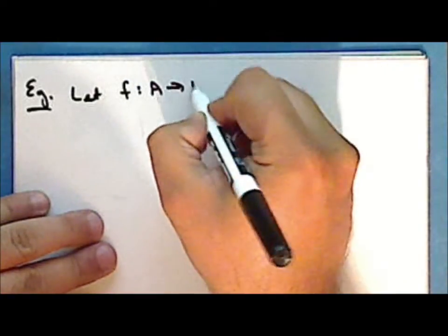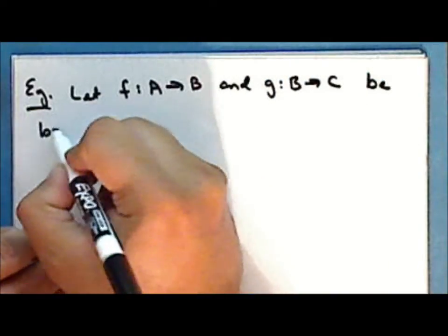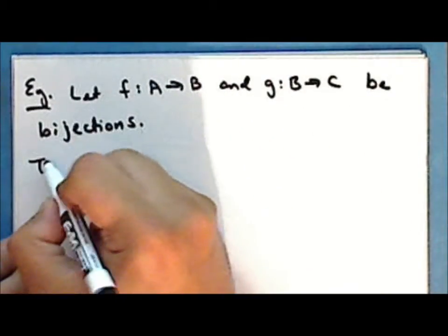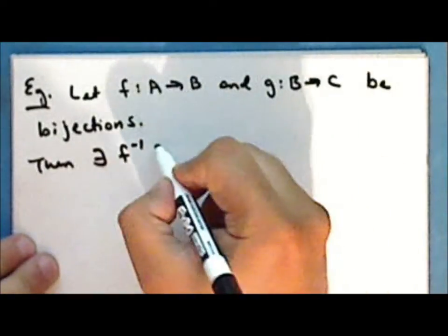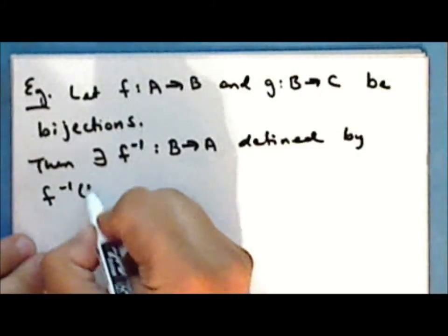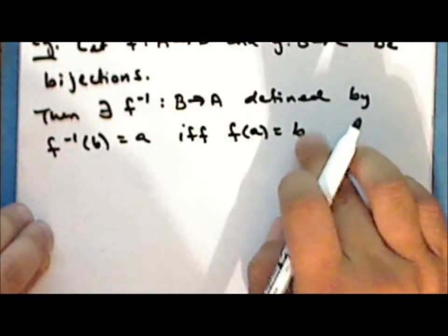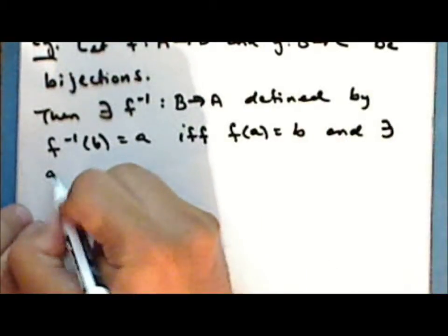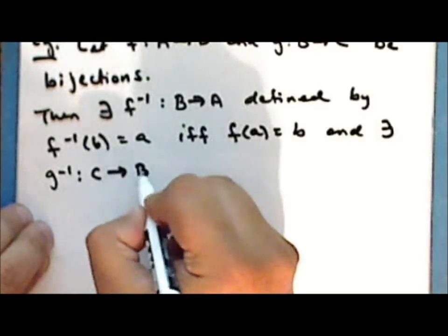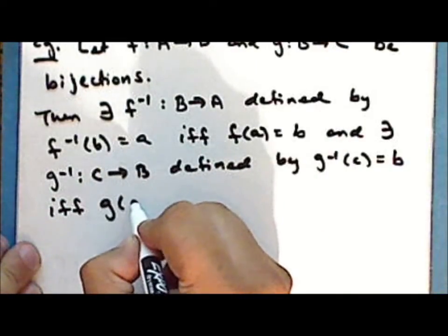We'll start with an exercise from the previous lecture. Let F, a map from set A into set B, and G, a map from set B into set C, be bijections. Then there exists an inverse function F⁻¹ from set B into set A, defined by F⁻¹(b) = a if and only if F(a) = b, and there exists an inverse function G⁻¹, a map from set C into set B, defined by G⁻¹(c) = b if and only if G(b) = c.